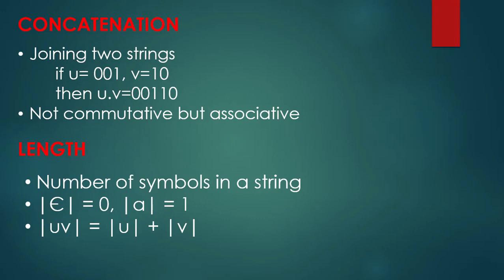The next terminology is concatenation. Concatenation is an operation on strings. For example, if U is 001 and V is 10, then U dot V equals 00110. Concatenation is not commutative — UV is not equal to VU. But it is associative.